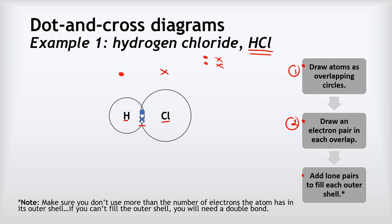Step three is to add in lone pairs to fill each outer shell. Hydrogen only needs two electrons for a full shell, so we won't draw any pairs there. But chlorine needs eight electrons for a full shell — it's already got two, so we're going to add in three more lone pairs to make it up to eight in chlorine's outer shell. Make sure you don't use more than the number of electrons the atom has in its outer shell to start with. Hydrogen has one electron, and chlorine has seven — and we've fulfilled that rule. We'll look at some examples later where we need to draw double bonds.